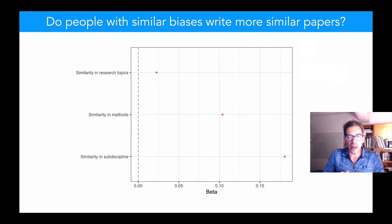A positive beta here means that people's papers are more similar. So, not surprisingly, those who work in the same sub-discipline as a social psychologist, for example, those who use more similar methods, and less so those who study similar research topics, these are from a multiple regression model, tend to write more similar papers.